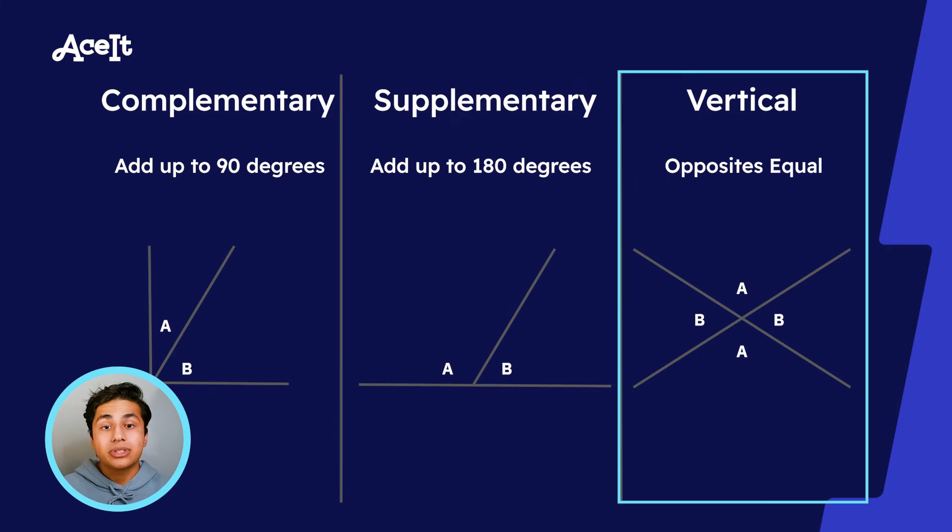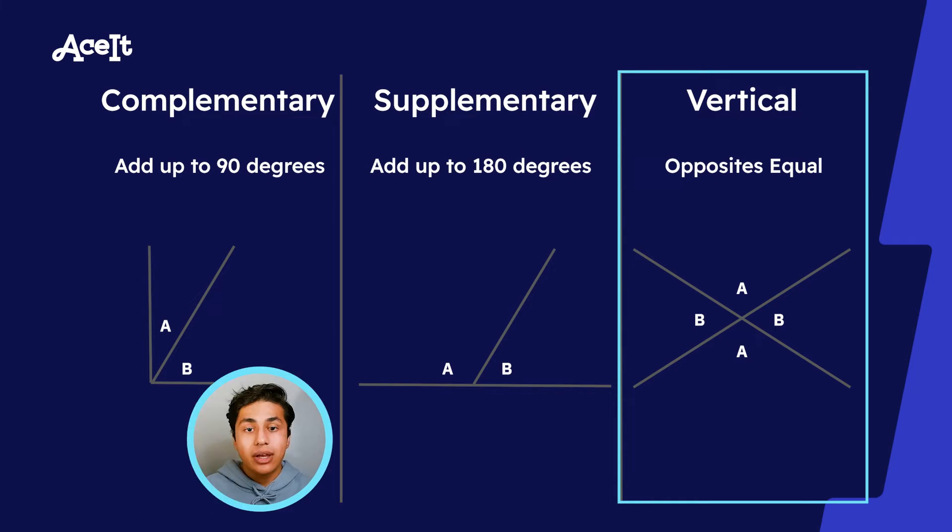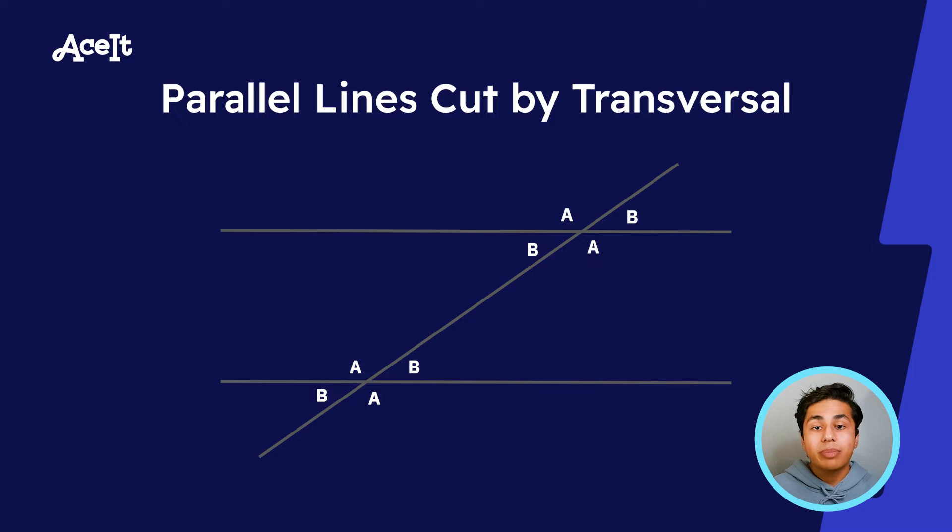Vertical angles are two angles that form opposite to one another whenever two lines intersect. These opposite angles are equal to one another. Whenever two lines are parallel and are cut by a transversal line, then two different sets of vertical angles are created, and each set of angles A and B are supplementary as well.